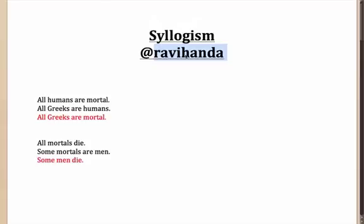To begin with, we need to understand the fundamental idea of Syllogisms, which is that they are based on pure and simple logic. Let us look at a couple of very simplistic examples. Let's say I am given a statement: all humans are mortal, all Greeks are humans, and then I have to verify whether the conclusion that is given to me is correct or incorrect.